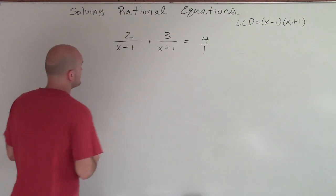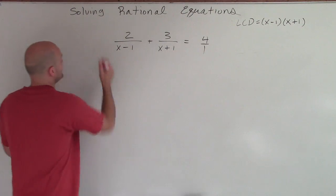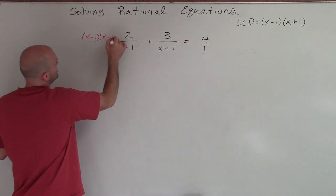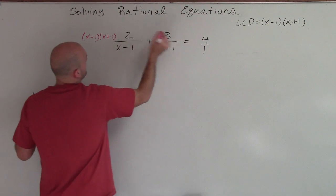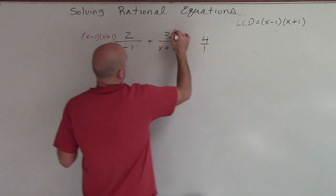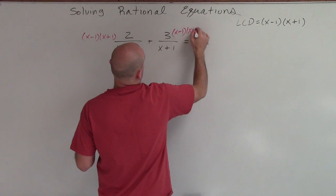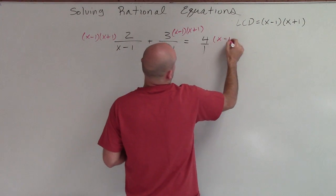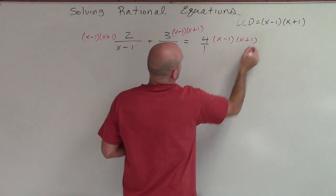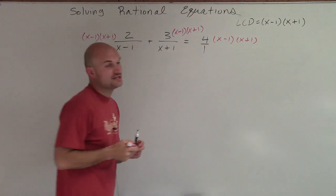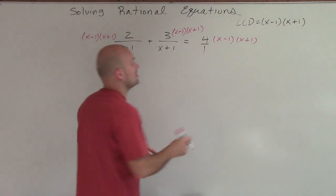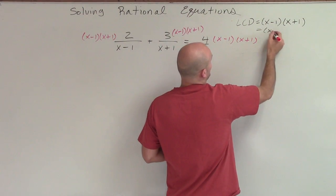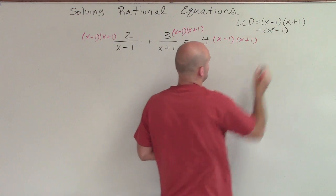So therefore, what we're going to do is multiply each term by x minus 1 times x plus 1. Now, it's also important to notice that x minus 1 times x plus 1 can also be written in the form of x squared minus 1.